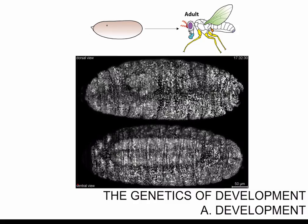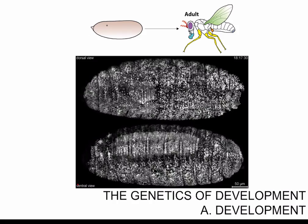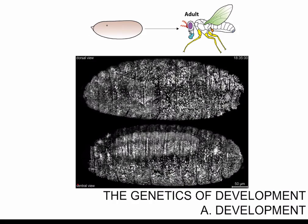In fact, at the end of 24 hours you have a fully functional larva that is capable of surviving in the wild on its own, feeding itself, moving around, and is ready to hatch from the egg. What is amazing about this process of development is that the egg will go from a single cell to billions of cells organized into organs and tissues in a matter of 24 hours, completely autonomously, requiring no input from the outside.